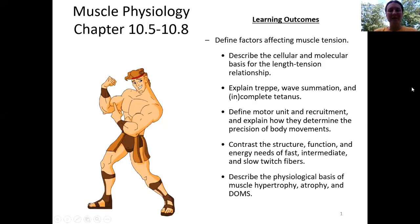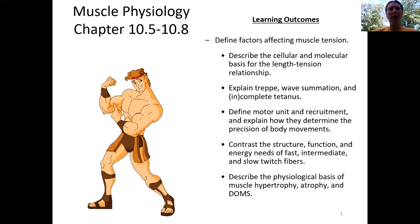Hi everybody. Today we're going to be learning about yet another component of muscle physiology. In our last lesson we talked about how individual muscle cells work. Today we are going to zoom out in the body and talk about how entire muscles work. The way our biceps brachii, for example, is actually able to contract depends on the cells, but there are a lot of other factors that work together to give rise to the functionality of the entire muscle.